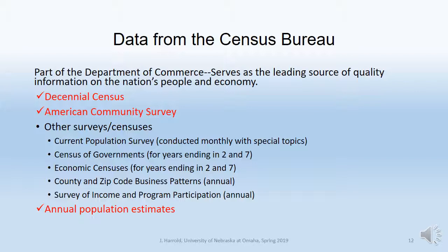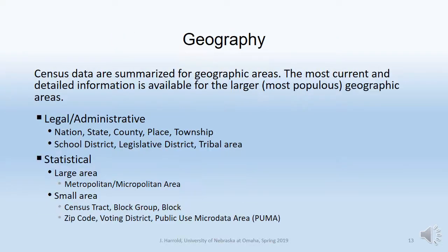The Census Bureau has grown immensely from the every-10-year census. Census data is based on geographic areas. We have legal and administrative geographic areas: the nation, states, counties, places, and townships — a hierarchy from nation to state to county to place to township. Then we have other administrative areas such as school districts, legislative districts, tribal areas, and territories. Contrasting to that, we also have statistical areas.